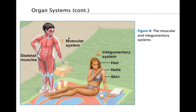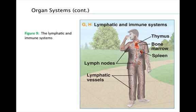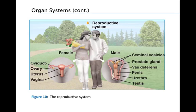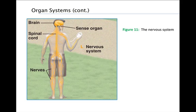The integumentary system — our hair, nails, and skin — protects us against mechanical injury, infection, excessive heat or cold, and drying out. The lymphatic system returns excess body fluid to the circulatory system and functions as part of the immune system. The immune system defends the body against infections and cancer. The urinary system, sometimes called the excretory system, removes nitrogen-containing waste products from the blood and regulates the chemical makeup, pH, and water balance of the blood. The digestive system ingests and breaks down food, absorbs nutrients, and eliminates undigested material. The reproductive system produces gametes and sex hormones; the female system provides organs to support a developing embryo and glands for producing milk. The nervous system coordinates body activities by detecting stimuli, integrating information, and directing the body's responses.